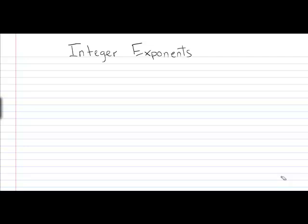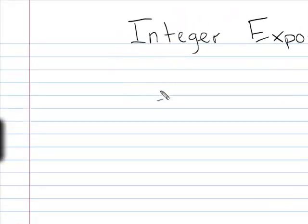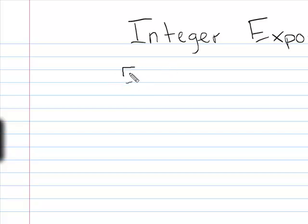Today we're looking at integer exponents — that means the exponents can be positive, negative, or zero. I'm going to talk about what happens when the exponent is zero and when it becomes negative, and I'm going to do so with a whole bunch of examples. I'm going to make a big chart full of examples.